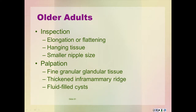The breasts in post-menopausal women may appear flattened, elongated, and suspended more loosely from the chest wall as the result of glandular tissue atrophy and the relaxation of suspensory ligaments. A finer granular feel on palpation replaces the lobular feel of glandular tissue. The inframammary ridge thickens and can be felt more easily. The nipples become flatter and smaller. Hormone replacement therapy can result in fluid-filled breast cysts, which can also be painful.